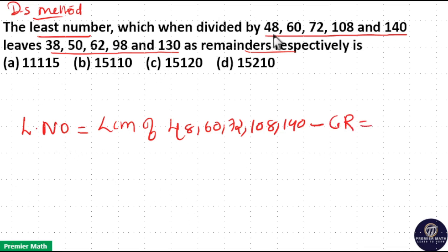Here common remainder means when you divide this number with 48 you will get 38 as remainder. When you divide this number with 60 you will get 50 as your remainder. So if you look at this, common remainder is 48 minus 38 equals 10, 60 minus 50 equals 10, 72 minus 62 equals 10. So 10 is common remainder.